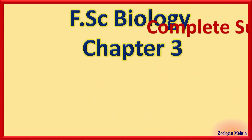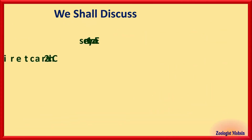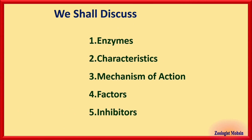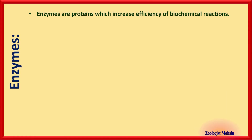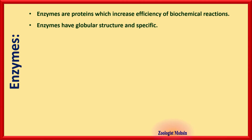Welcome to this quick revision chapter on enzymes. Enzymes are basically proteins made up of amino acids which increase the efficiency of biochemical reactions, increase the rate of biochemical reactions, and catalyze biochemical reactions. They are also called biocatalysts and have a globular structure.